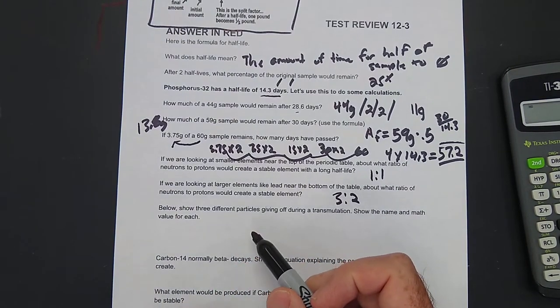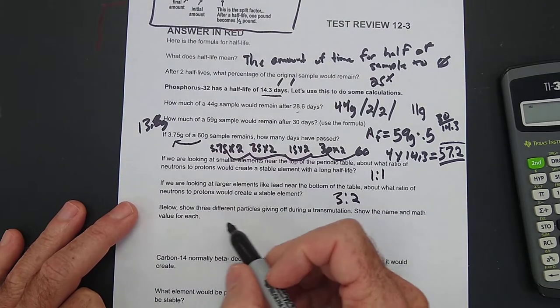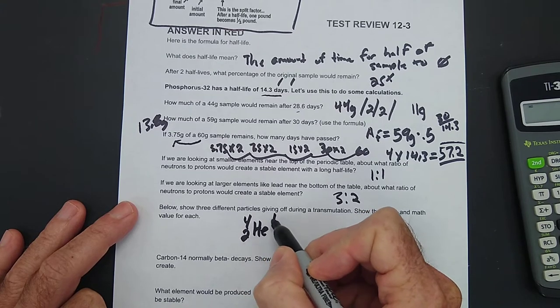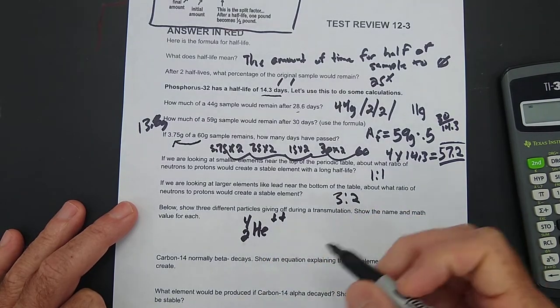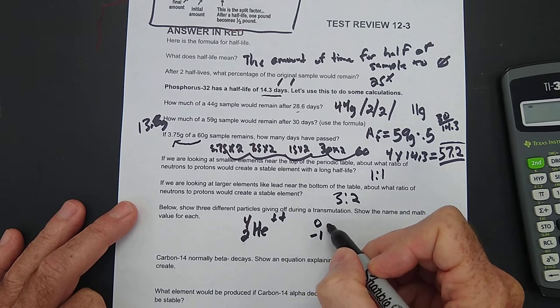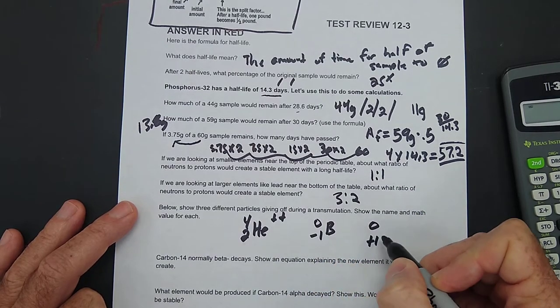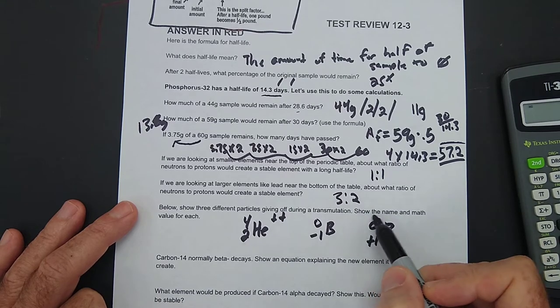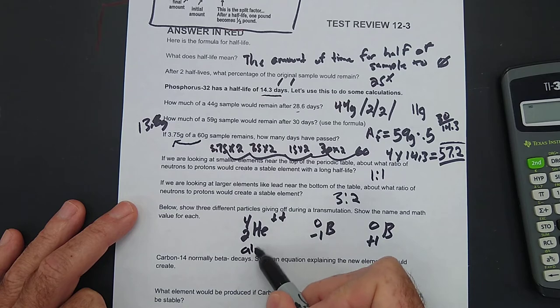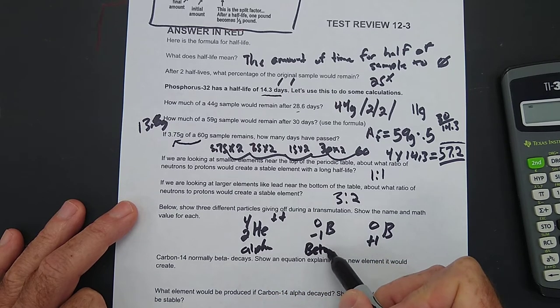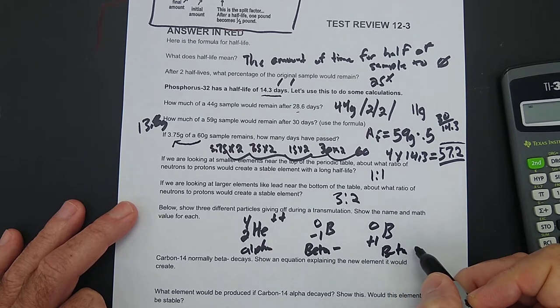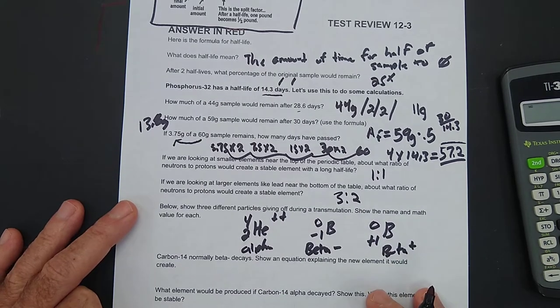Below show three different particles. An alpha particle is 4 over 2 helium plus plus, or you could write alpha plus plus, a beta negative particle, and here's a beta positive particle. Let's show the name in math. Alpha. Beta negative. That's an electron. And then beta positive. That's a positron.